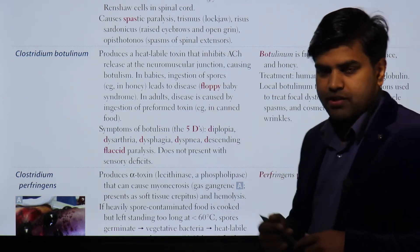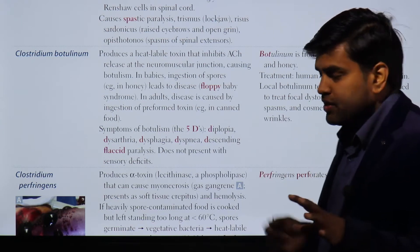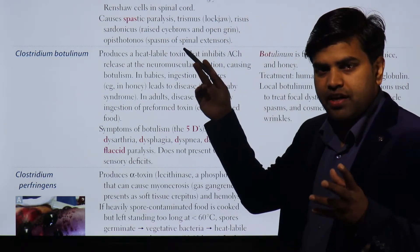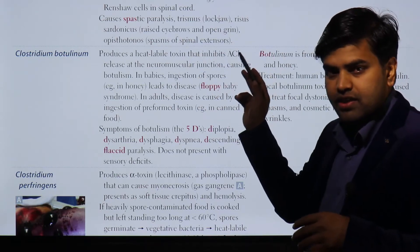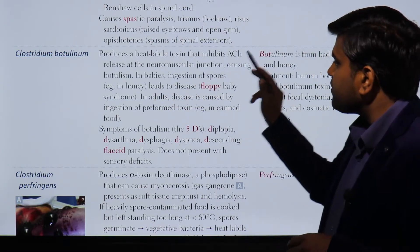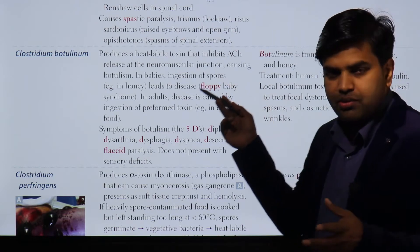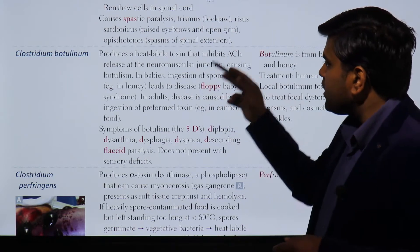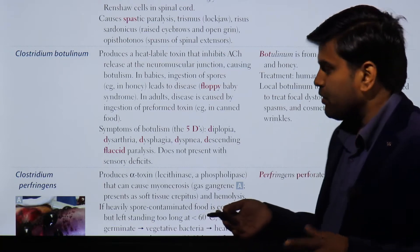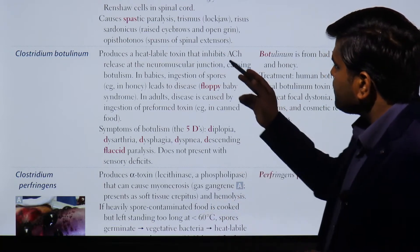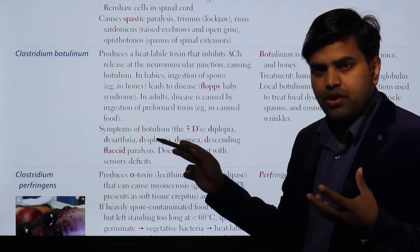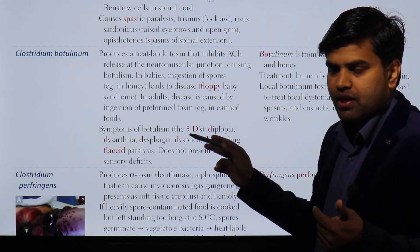In contrast with C. tetani, where there was absence of GABA and glycine — inhibitory neurotransmitters — in botulism it is acetylcholine, an excitatory neurotransmitter, that is inhibited. Acetylcholine has many actions in the body from a pharmacology point of view, so if acetylcholine is inhibited, all the symptoms will develop, mainly flaccid paralysis.